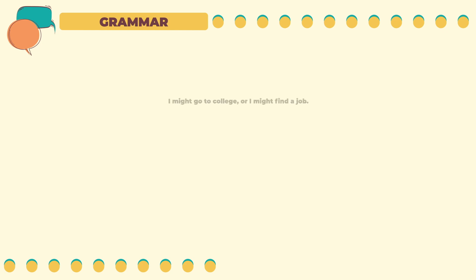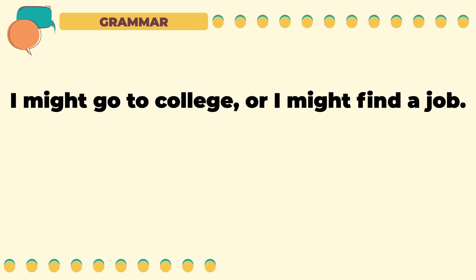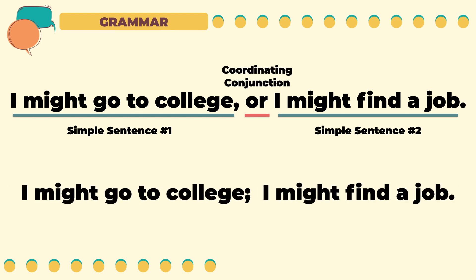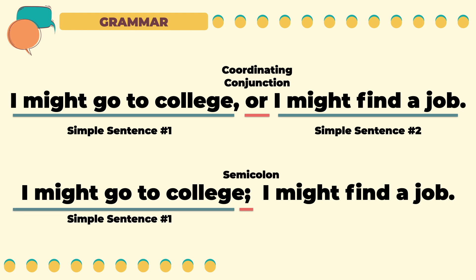For example: 'I might go to college, or I might find a job.' A compound sentence joins two or more simple sentences. The first simple sentence is 'I might go to college,' and the second simple sentence is 'I might find a job.' These two sentences are joined by the coordinating conjunction 'or.' Instead of a conjunction, a semicolon may be used: 'I might go to college; I might find a job.' The first simple sentence is still 'I might go to college,' and the second is 'I might find a job.'